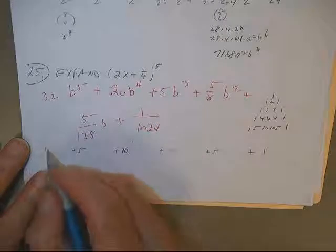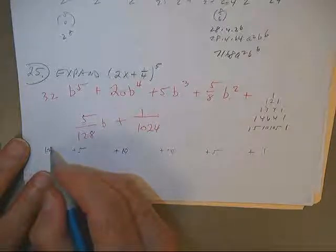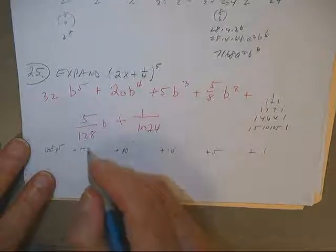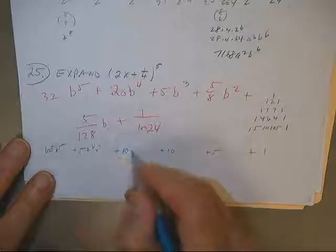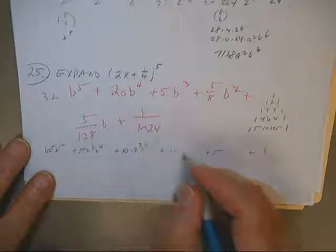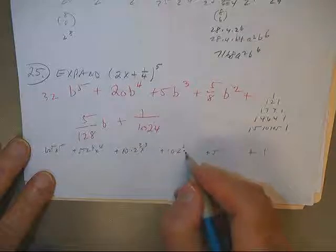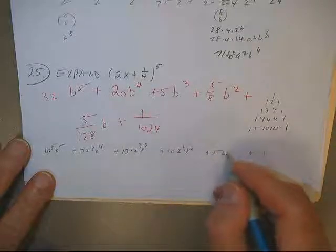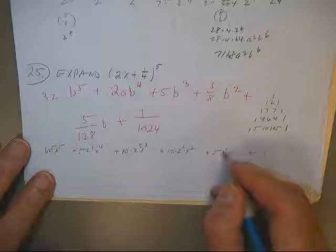And you'd want to do 2 to the fifth, x to the fifth, 2 to the fourth, x to the fourth, 2 cubed, x cubed, 2 squared, x squared, 2 to the first, and x to the first.